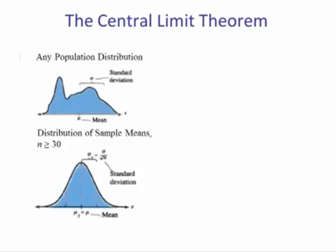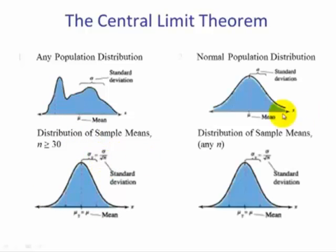Here's a visual. For any population distribution, the distribution of the sample means for size n greater than or equal to 30 will become normal. This distribution will have the same mean as the population and the standard deviation will be smaller. If the original population is normal, the sampling distribution of the means for any sample size will become normal, with the same mean as the population mean and a smaller standard deviation.